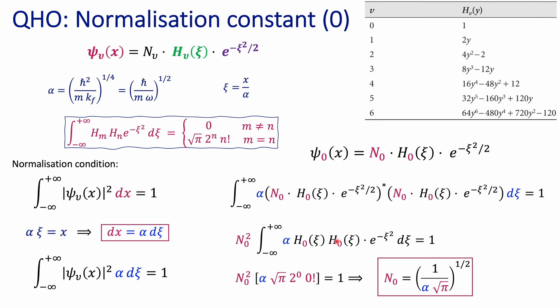Since 2 to the power of 0 and 0 factorial are both equal to 1, those two terms cancel. Solving for N₀ gives the normalization constant for the ground state: (1 / (α√π))^(1/2).